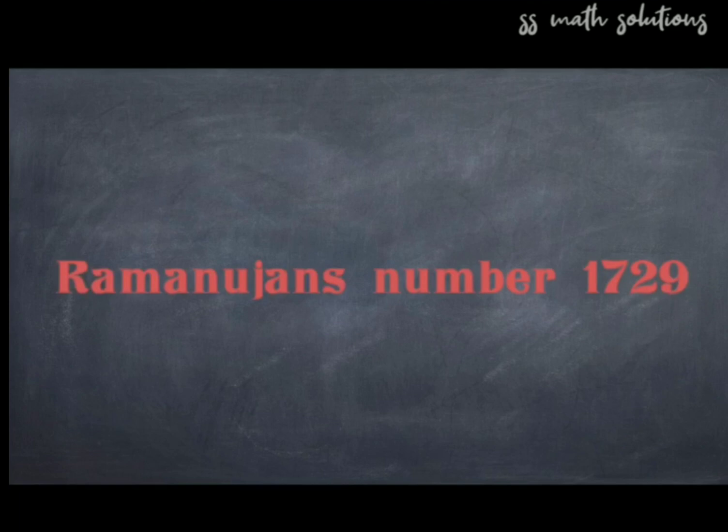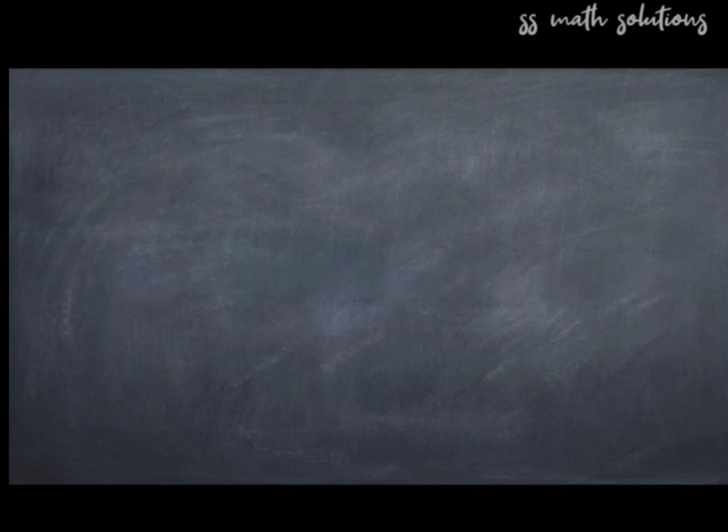Ramanujan's number is 1729. It can be expressed as the sum of cubes of two numbers in two different ways: 1³ + 12³ and 9³ + 10³, both equal 1729.